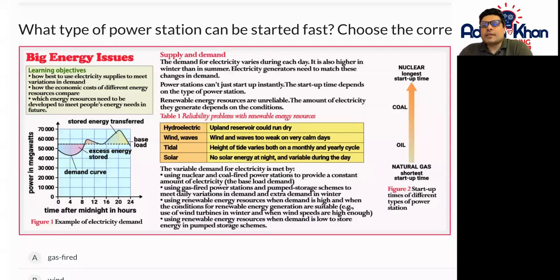The demand for electricity varies during each day, so it is also higher in winter than in summer. Winter being quite cold, we tend to put on more of our heaters. It gets dark around about 4 or 5 p.m. in the UK, which means that we'll have to turn on our lights so much earlier. So we tend to use much more electricity in the winter than we do in the summer.